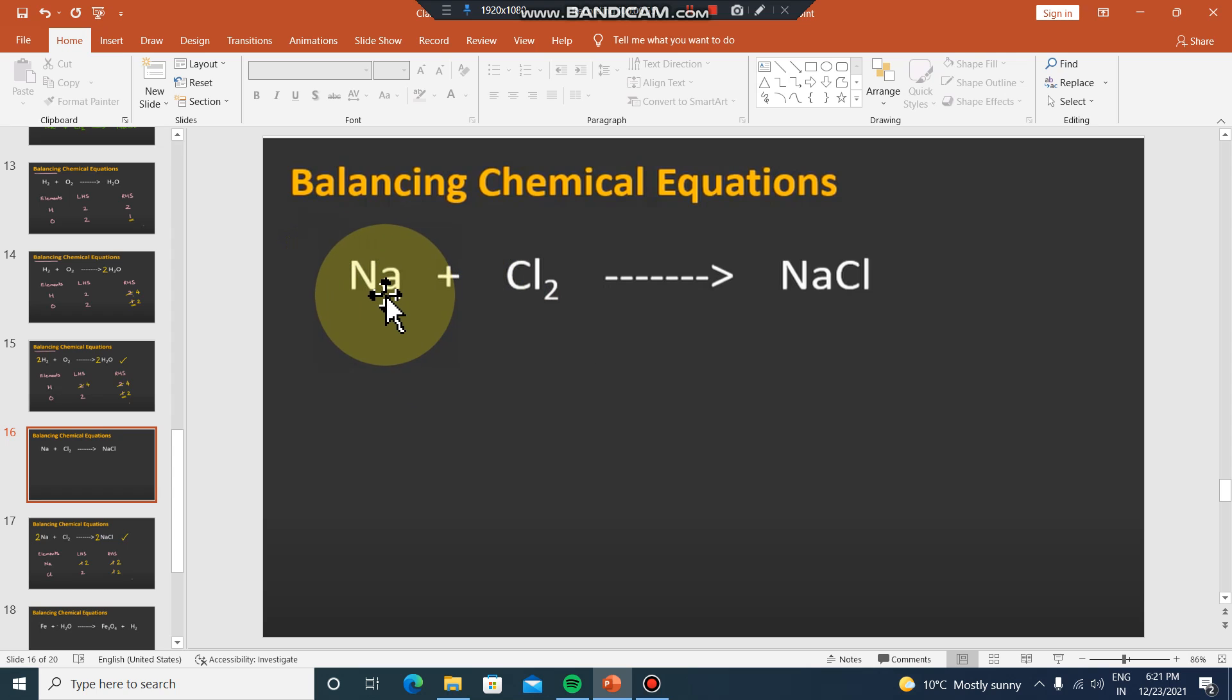The chemical equation is balanced. The next example is sodium plus chlorine. Sodium is a metal, molecular form Na, and chlorine is a gas, Cl2. And the product is sodium chloride. Sodium chloride is balanced. Chlorine valency is 1.